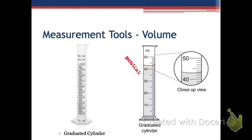If I was going to look at this particular measurement, it's measured to the whole number — I can see 41, 42, 43. Is it greater than 42 milliliters? Is it greater than 43? It's pretty hard to tell. I personally think it dips a little below 43 — you can kind of see where that meniscus crosses over that tick mark, so I would probably call this measurement 42.9.